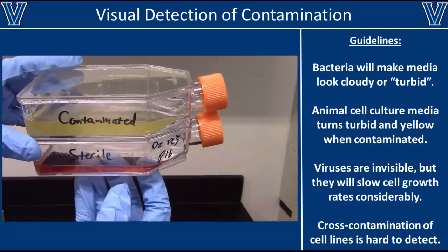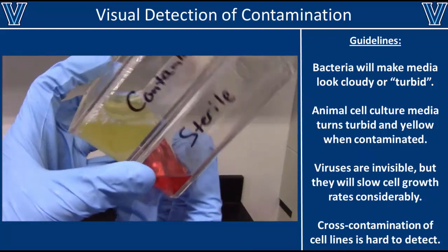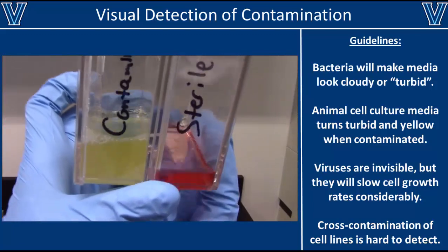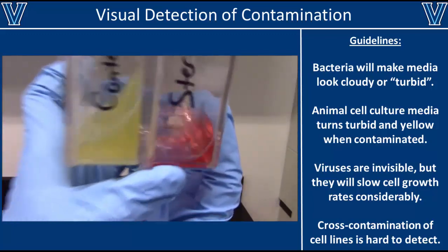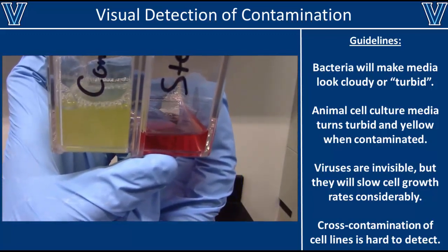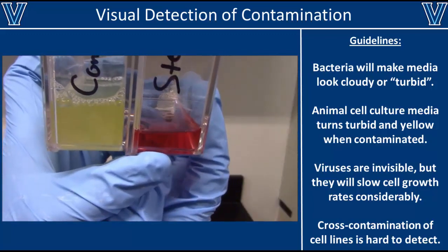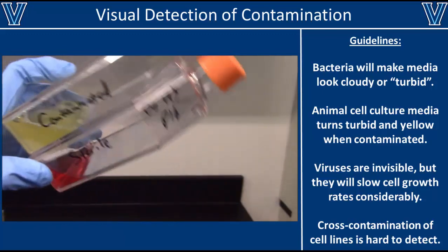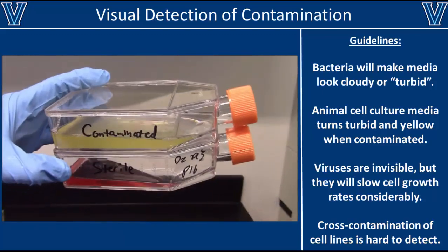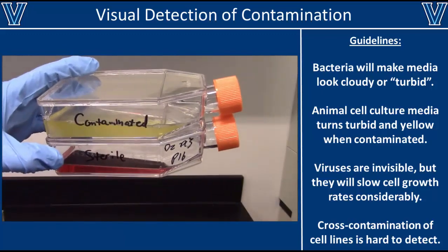Animal cell culture media will also become cloudy when contaminated with bacteria. In addition, these media normally contain a pH indicator such as phenol red that changes color from red to yellow as bacteria decrease the pH of the solution. Therefore, if you ever see any animal cell culture flasks that are yellow and cloudy, you should dispose of them immediately.